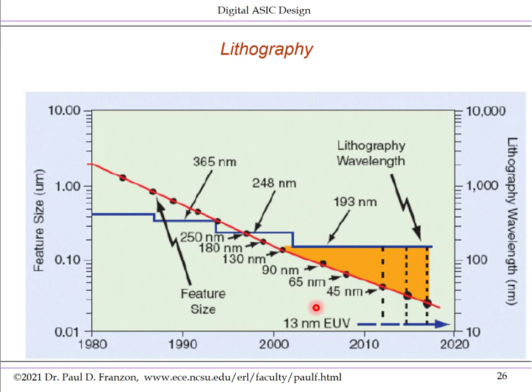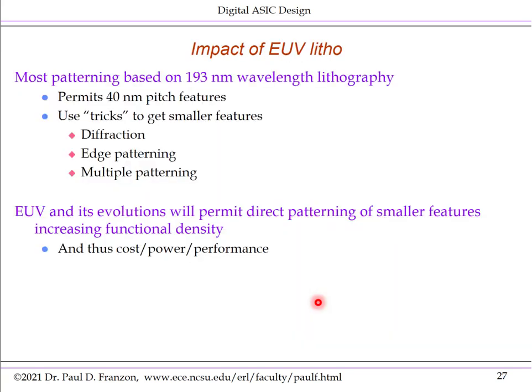Today, many fabs are introducing extreme UV (EUV) lithography, where the light wavelength is 13 nanometers. By doing photolithography in water at 193 nm, features down to about 40 nanometers could be defined. Beyond that, tricks like multiple patterning, edge patterning, and diffraction were required. EUV breaks through this bottleneck and permits direct patterning of smaller features, and increasingly fabs are turning to EUV as they move to more advanced nodes.